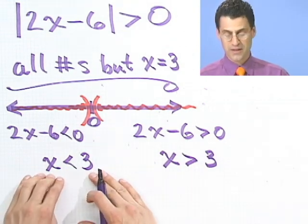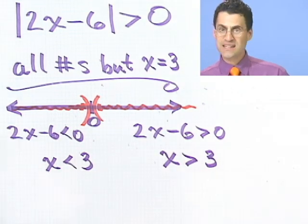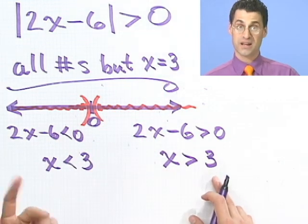Well, either x is less than 3 or x is greater than 3. What does that mean? It means that x can be any single number at all except 3. It's either bigger than 3 or less than 3, but not equal to 3.